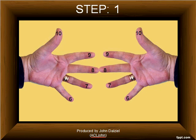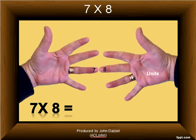The first step when you are multiplying is to touch the finger or thumb on the left hand with the finger or thumb on the right hand that match the numbers that you want to multiply. So if we're going to multiply 7 times 8, you can see the finger 7 on the left hand touches the finger 8 on the right hand.